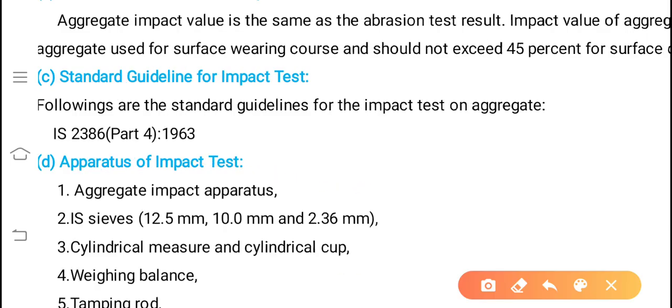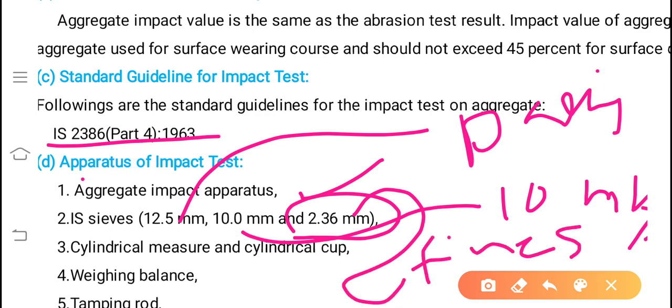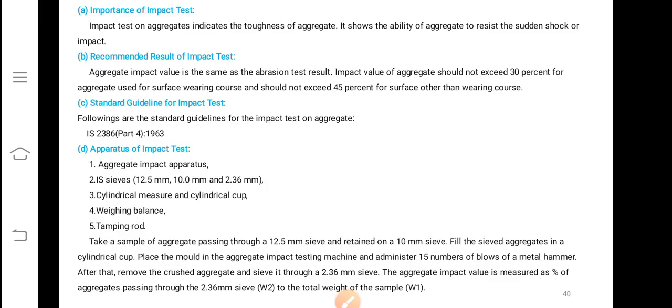Standard guideline for impact test you can get it from IS 2386 Part 4 1963. Aggregate impact apparatus required: IS sieves, 12.5mm passing, retained on 10mm - it is same as in case of crushing value test. After the test is performed 2.36mm IS sieves to be taken and fines weight is to be found out. Cylindrical measure and cylindrical cup, weighing balance, and tamping rod as usual as in case of aggregate crushing value test.